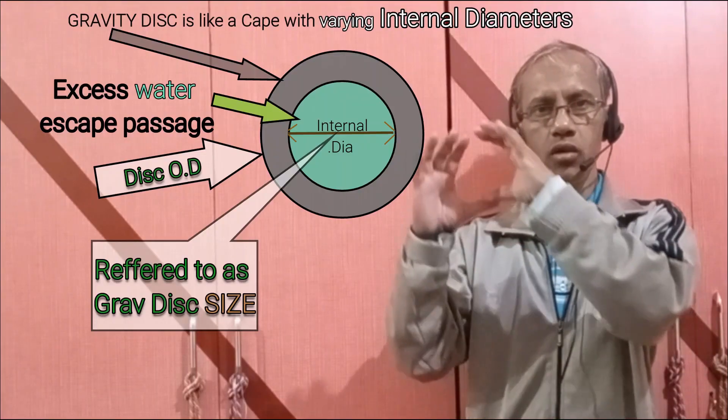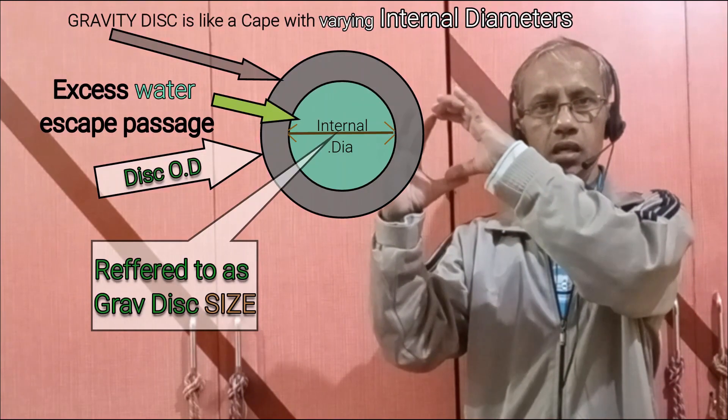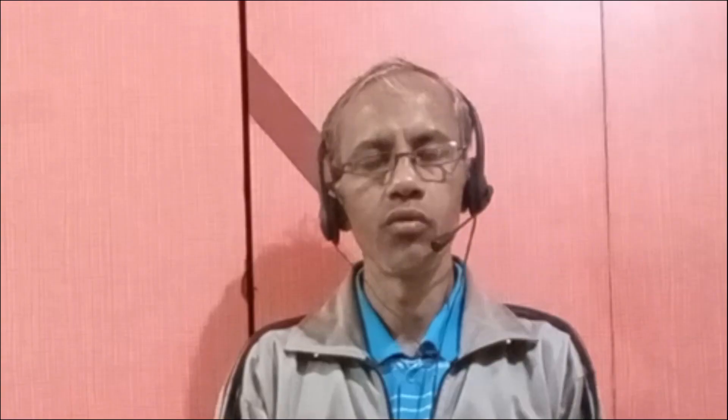When we want to increase the pressure, we have to decrease the size of the gravity disk. The term 'size of the gravity disk' refers to the internal diameter of the gravity disk, which controls the mass of the water left inside the periphery.